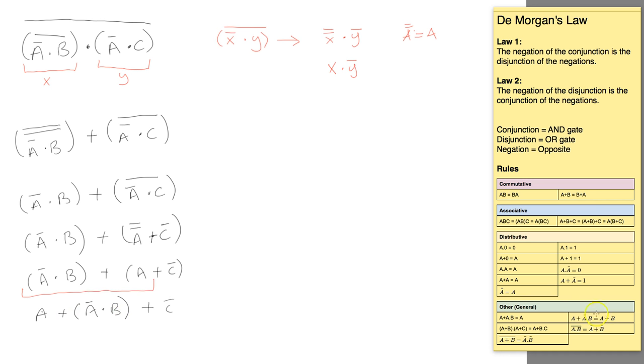Now if you look back at this general rule, we can see that A or not A and B is equal to A or B, so we can turn this expression here into simply A or B or the remaining not C.